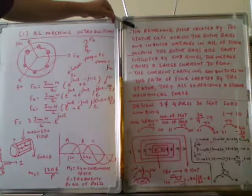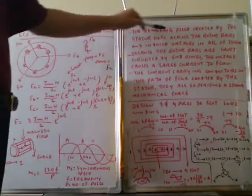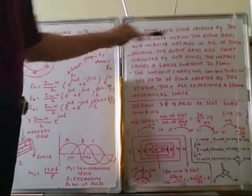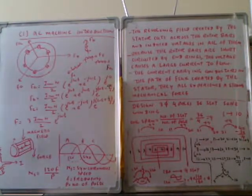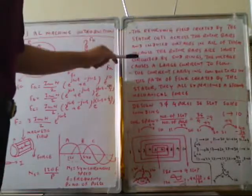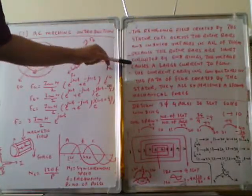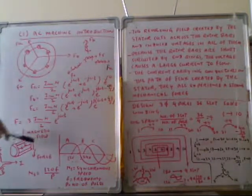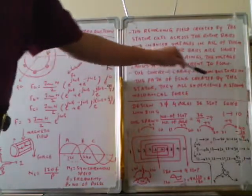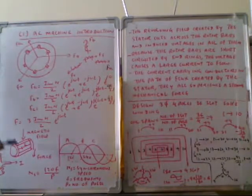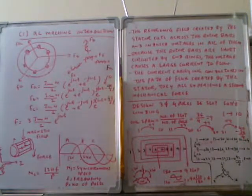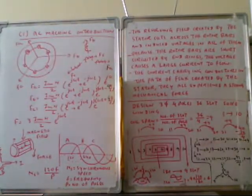The revolving field created by the stator sweeps across the rotor bars and they induce voltage in all of them. They are passing through the stator winding and casting the rotor bars, and voltage is induced. Because the rotor bars are short circuited by the rings, the voltage causes large current to flow. This voltage creates high current flowing. The current carrying conductors in the flux created by the stator experience a strong mechanical force. Therefore, using Fleming's hand rule, the flux and current can produce force. This is the basic operation principle of induction motor.